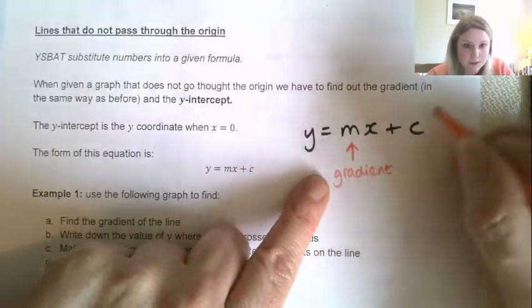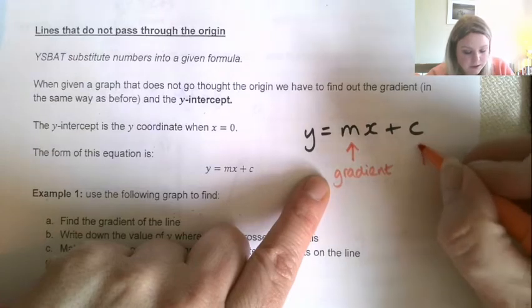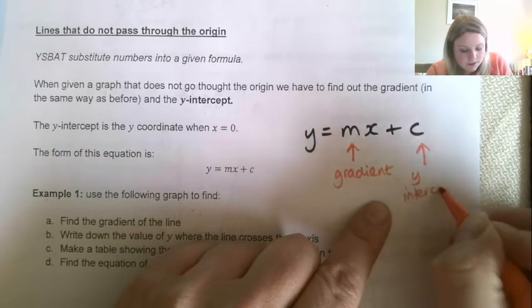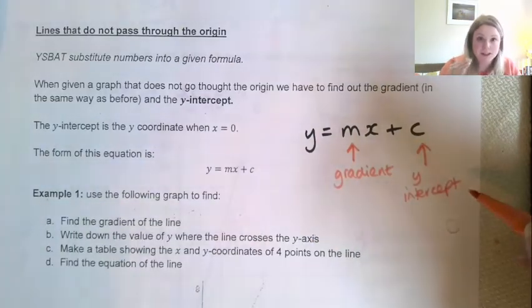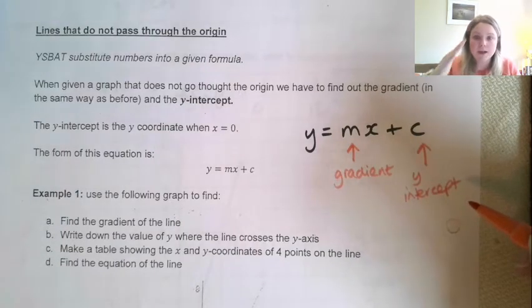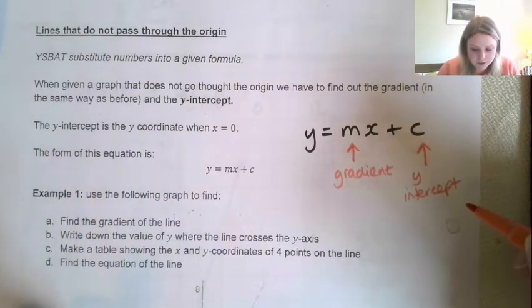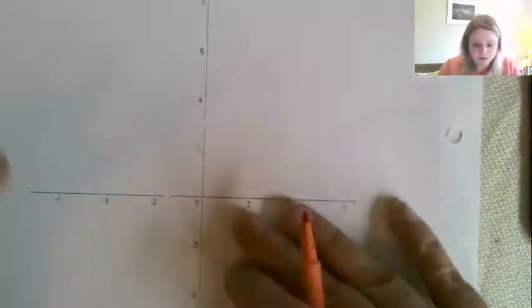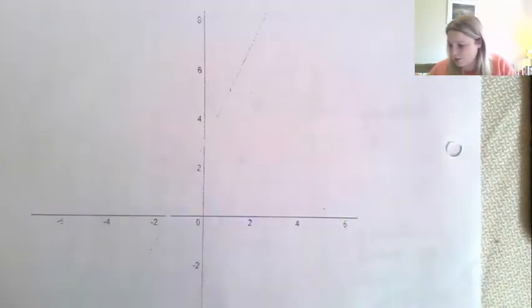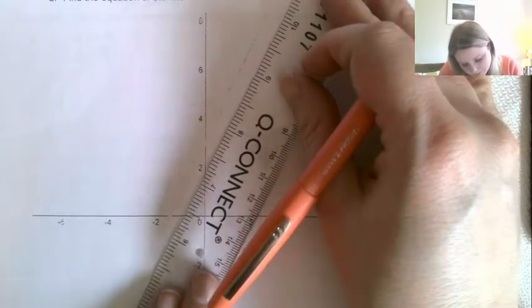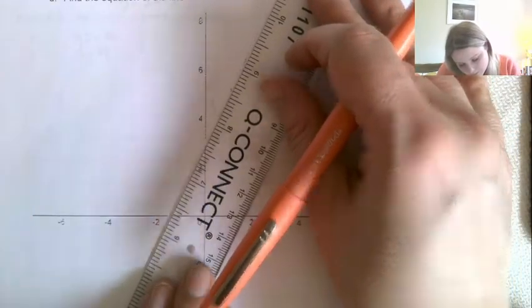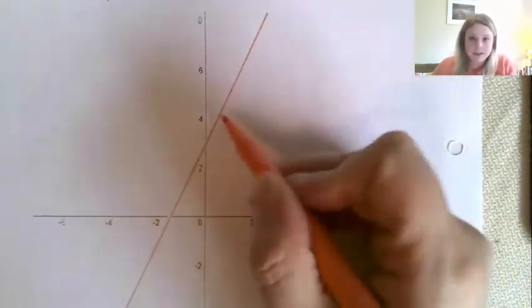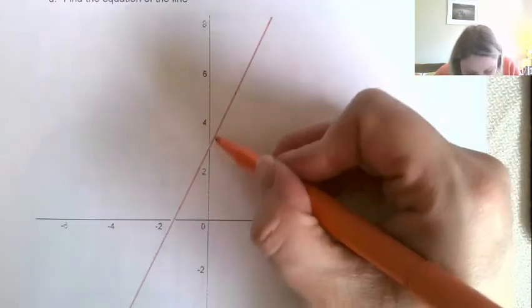Now do you remember we had discovered that the number in front of the x told us the gradient of the graph. Well, this little number that's by itself tells us what we call the y-intercept. So the y-intercept, and that just means the point at which the line crosses that y-axis. So it says here in your notes, the y-intercept is the y-coordinate when x is 0.